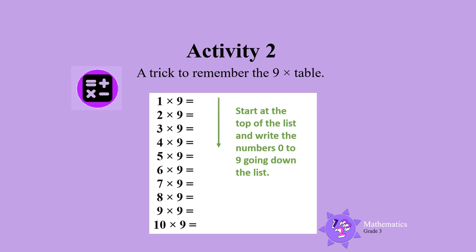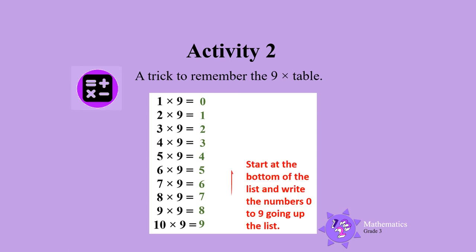Start at the top of the list and write the numbers 0 to 9 going down the list. Then start at the bottom of the list and write the numbers 0 to 9 going up the list. Can you see that we now have the answers to the 9 times table number sentences?